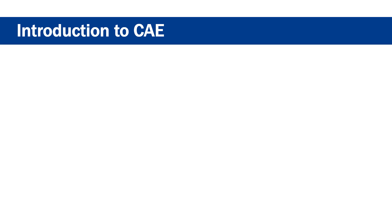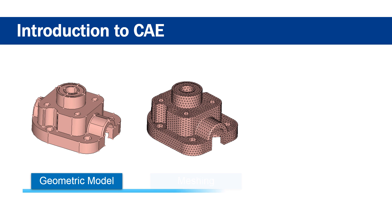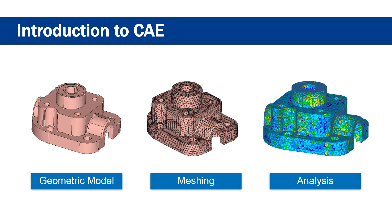In CAE, the geometrical model which was created through the CAD process is discretized into a number of small elements. This process of discretization in CAE is known as meshing. After the discretization of the geometry, each smallest element is then analyzed by using appropriate governing equations independently, and the obtained results are interpolated to get the overall result.